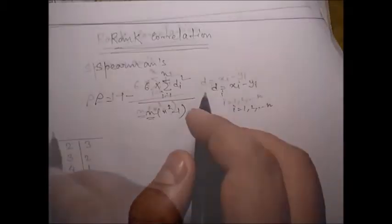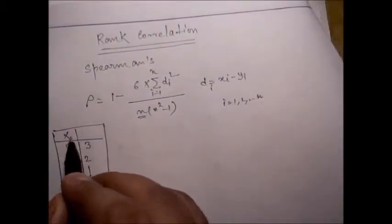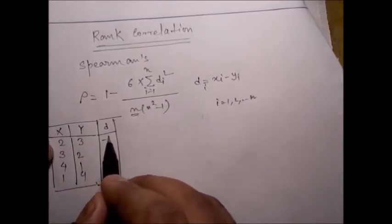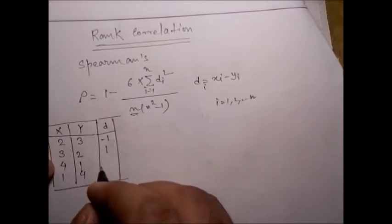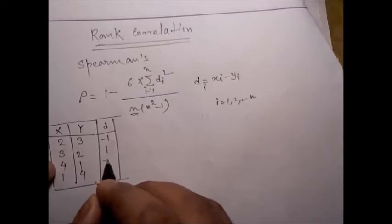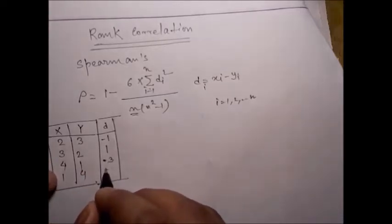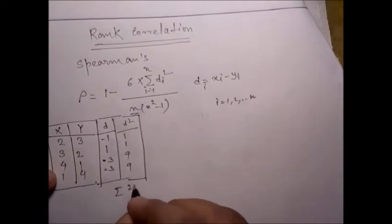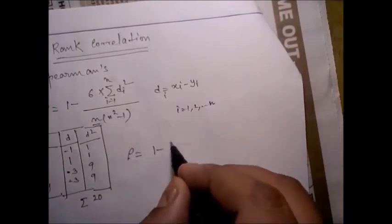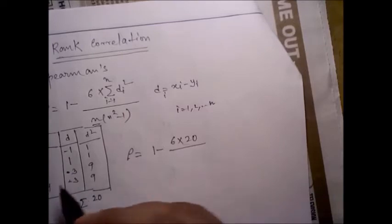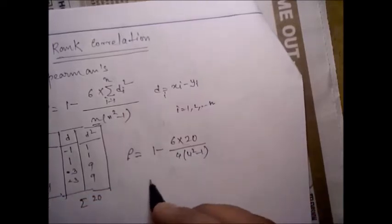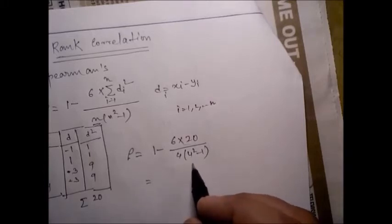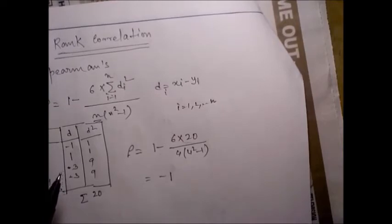So d is x_i minus y_i. First, calculate d: 2 minus 3 is minus 1, 3 minus 2 is 1, 4 minus 1 is 3, 1 minus 4 is minus 3. d-squared values are 1, 1, 9, 9. The summation of d-squared is 20. So rho equals 1 minus 6 times 20 divided by 4 times (4-squared minus 1). The answer is minus 1.